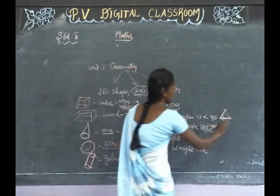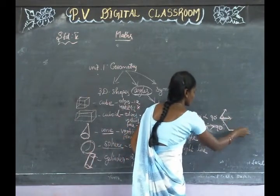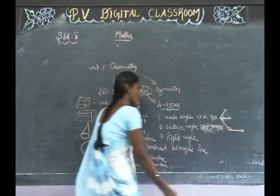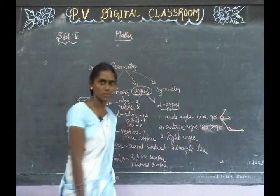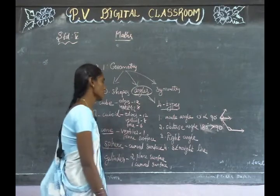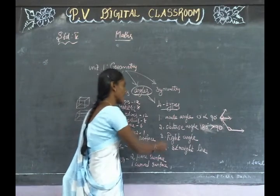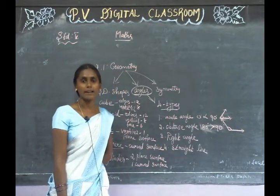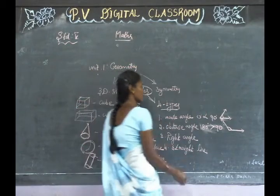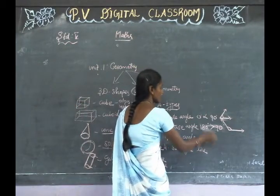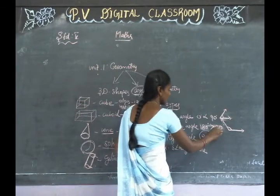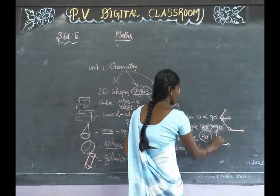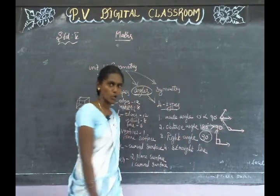So how do we draw it? What angle is this? Obtuse angle. Then next we will see right angle. Right angle is exactly 90 degrees.